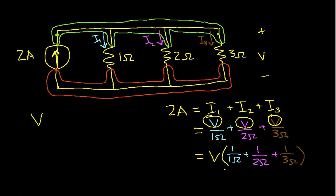So let's solve for V. We have V is 2 amps divided by 1 over 1 ohm plus 1 over 2 ohms plus 1 over 3 ohms. So I've taken this expression in the parentheses and just put it in the parentheses.